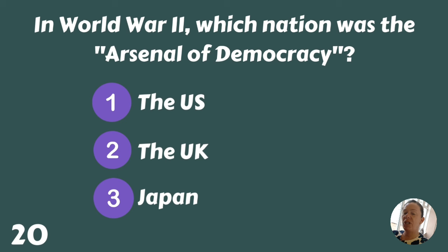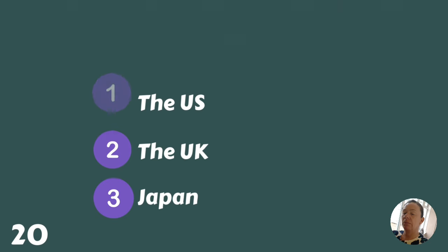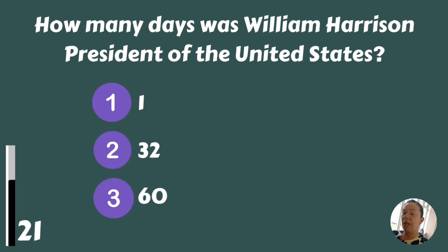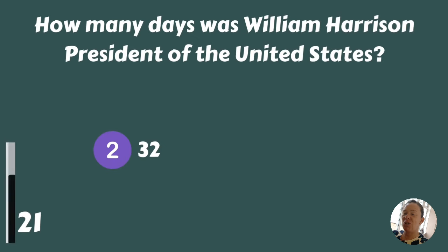In World War II, which nation was the arsenal of democracy — the US, the UK, or Japan? The US. How many days was William Harrison President of the United States — one, 32, or 60? Thirty-two days.